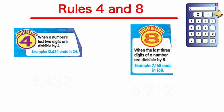Next are the rules for 4 and 8. For 4: when a number's last two digits are divisible by 4. For example, 12,624 — we look at just the last two digits, 24. If 4 can evenly go into 24, then this number is divisible by 4. For 8, we look at the last three digits. For example, 168 — we check if 8 can evenly go into 168. Using a calculator, 168 divided by 8 equals 21 evenly, so that whole number is divisible by 8.